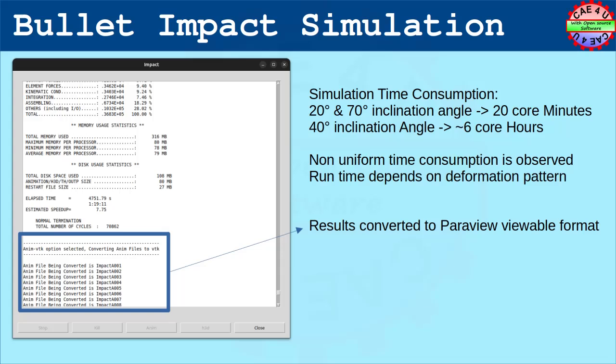The simulation for 20 degree and 70 degree plate inclination was completed quickly. That it took about less than 24 minutes while for 40 degree, it took around 6 core hours. The results are visualized using Paraview. The CSV data is processed using LibreCalc.